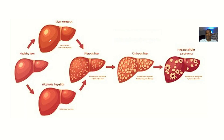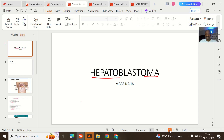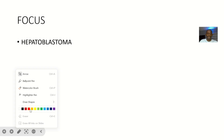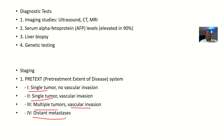For staging: Stage one is a single tumor with no vascular invasion. Stage two is a single tumor but with vascular invasion. Stage three involves multiple hepatoblastomas with vascular invasion. Stage four is when there is distal metastasis.